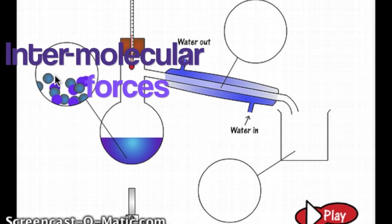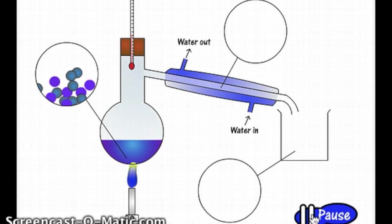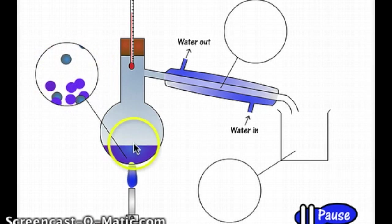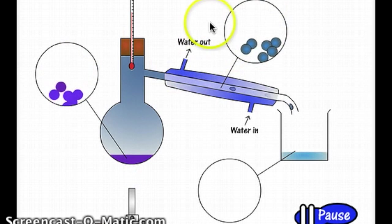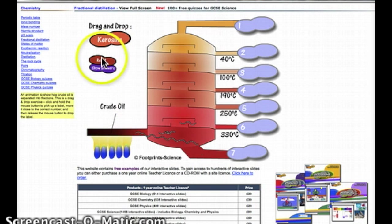There are intermolecular forces holding these molecules together and keeping them in a liquid. If we start to heat this liquid, then we are able to overcome those intermolecular forces. We heat them, the intermolecular forces are overcome, we form a gas, which then gets cooled down, turns back into a liquid, and we can collect the liquid.